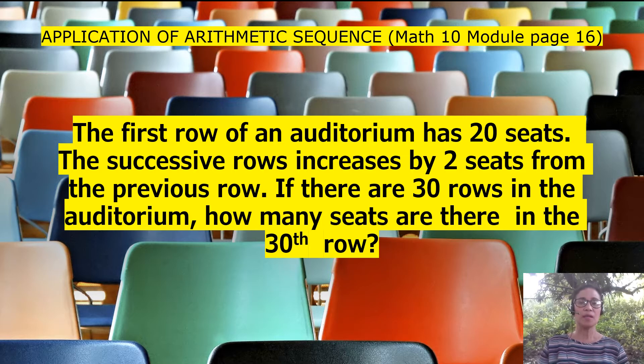Let me read the problem. The first row of an auditorium has 20 seats. The successive rows increase by 2 seats from the previous row. If there are 30 rows in the auditorium, how many seats are there in the 30th row?